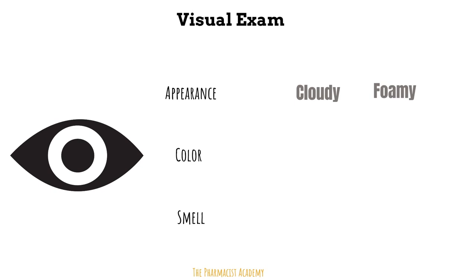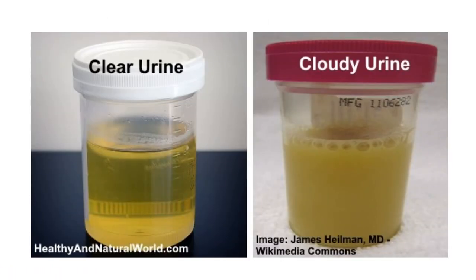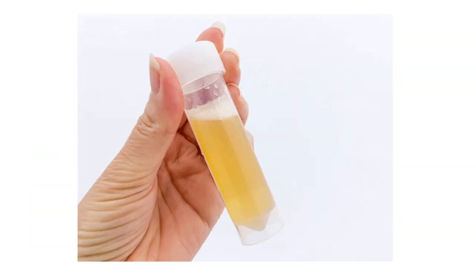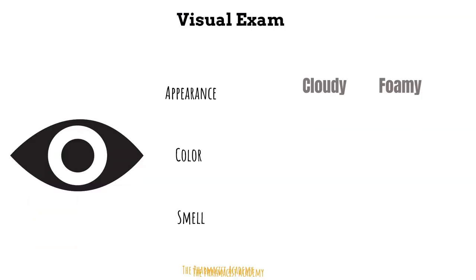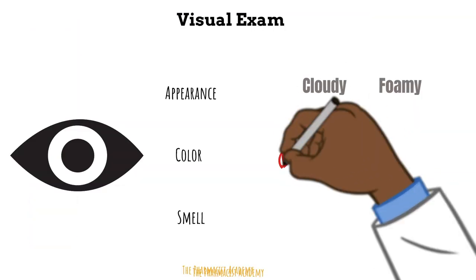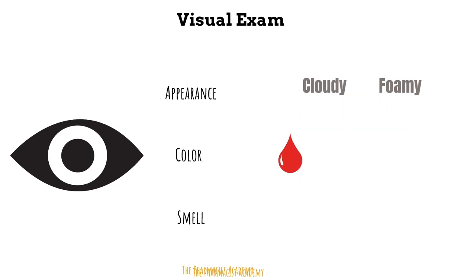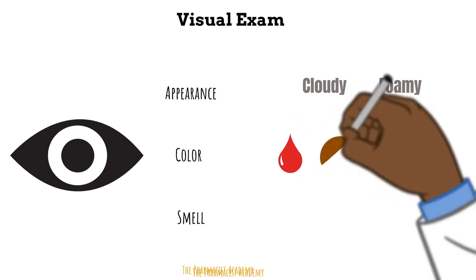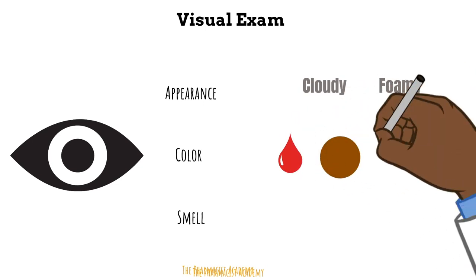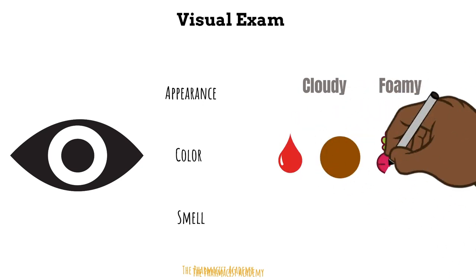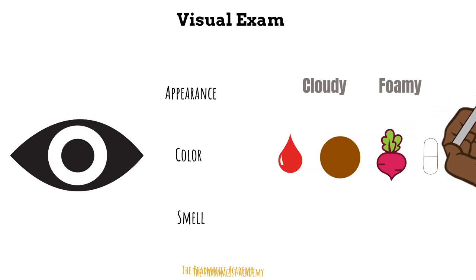Here is a picture depicting a cloudy urine and another of a foamy urine. When your urine color is red it usually means that there is some blood, but sometimes it's due to what the patient ate — for example beets — or a medication. Good examples are doxorubicin and phenazopyridine.